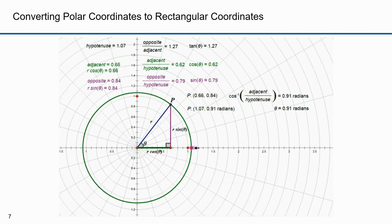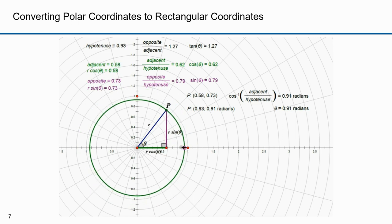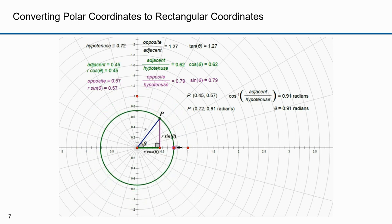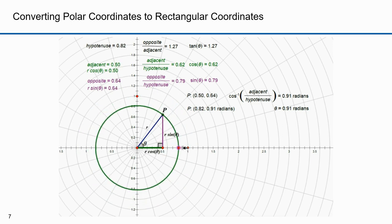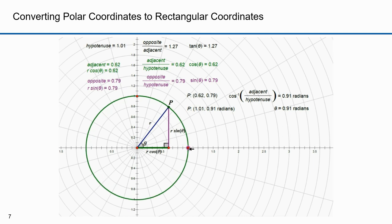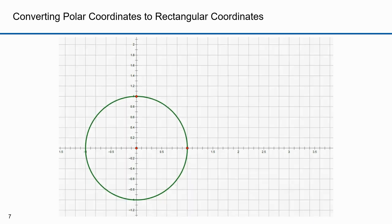I'm now switching to a polar coordinate system. I'm no longer plotting p with x and y coordinates, but I can derive them. The x coordinate is r cosine theta and the y coordinate is r sine theta. I've just shown you how we transform coordinates from polar coordinates to rectangular xy coordinates. This transformation where x equals r cosine theta and y equals r sine theta is used extensively.